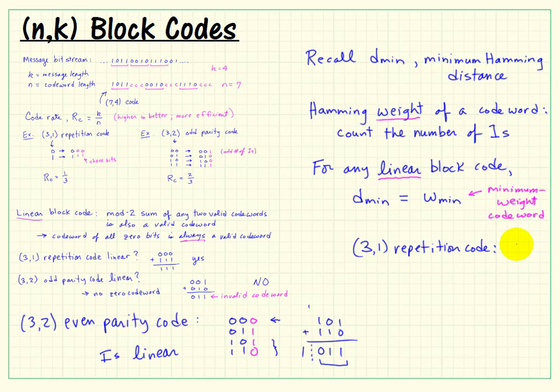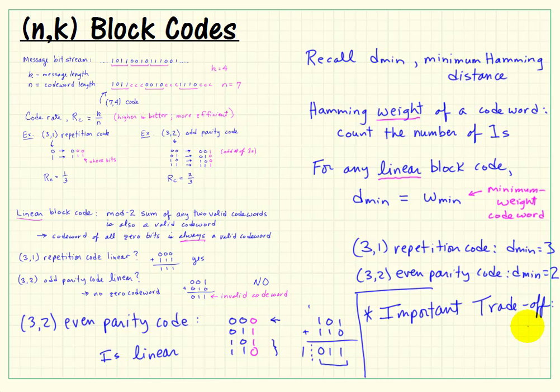So we simply look at our 3-bit repetition code and say well the minimum number of ones is three. So that means the minimum hamming distance is also three. Even parity code we would say that the minimum weight codeword is two. Therefore the minimum hamming distance is two. So we see that there's a very important tradeoff revealed here just by comparing these two examples. We really have a tradeoff between error control power and code rate. That is we can get high error control power but our rate is low. Or we can go the other direction have not so much power but more efficiency.